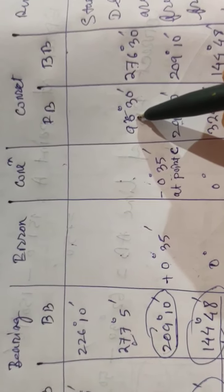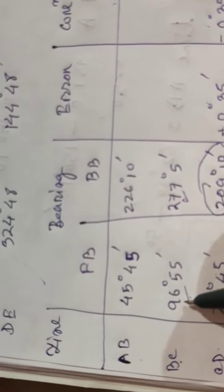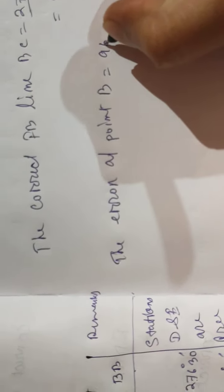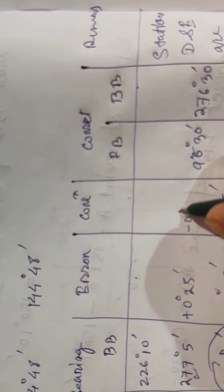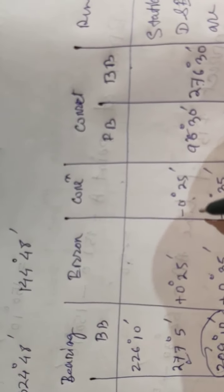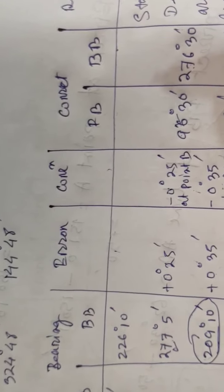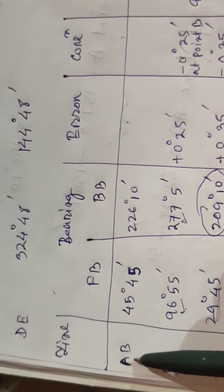Now we find the error. The given fore bearing is taken from point B and the corrected fore bearing is 96° 30'. The error at point B equals the given value 96° 55' minus the corrected 96° 30', which equals +0° 25'. The correction at point B is therefore minus 0° 25'. We will apply this correction to line AB as well, since it also has point B.